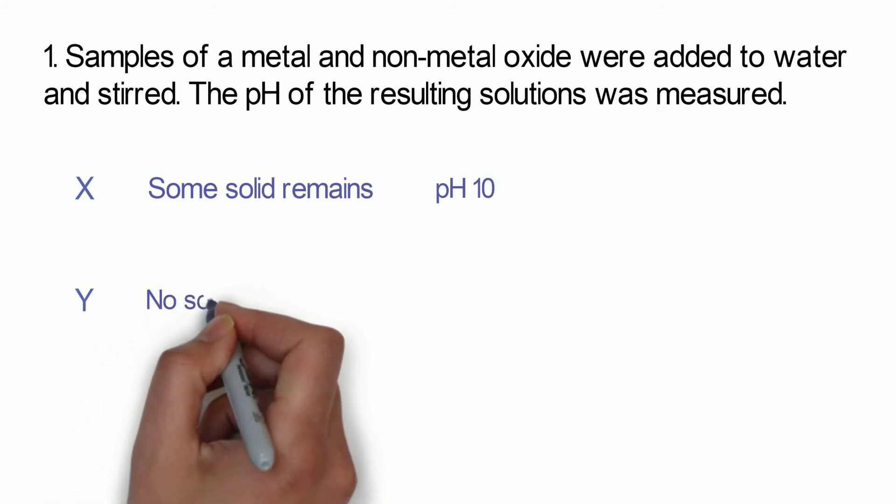Some of the solid is left which means it has a low solubility and it produces a solution with a pH of 10. Whereas Y dissolves completely and no solid remains. It has a really high solubility and it forms a solution with a pH of 4.